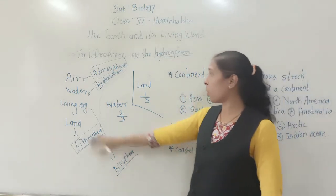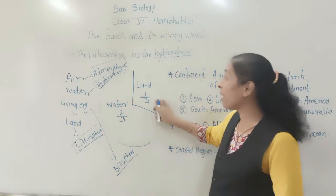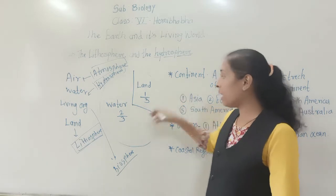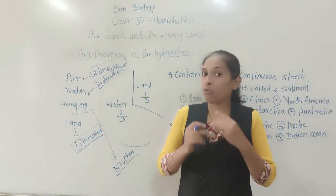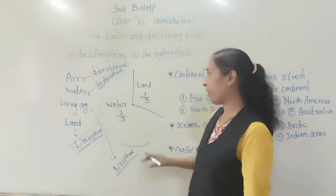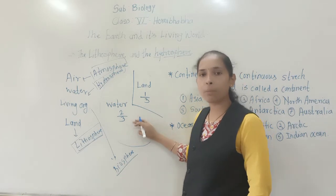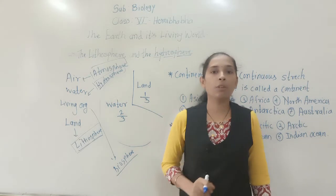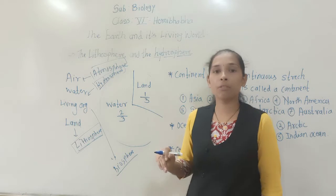If we consider the whole portion of the earth, one-third of the earth is covered with land, while two-thirds of the earth is covered with water. So water covers most of the earth's surface.